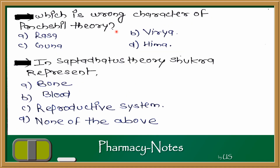Next question: which is the wrong characteristic in the Pancha-Guna theory? The Pancha-Guna theory includes Rasa, Guna, Veerya, and related properties. However, Kwath is a formulation known as decoction, and is not part of the Pancha-Guna theory. The answer is Kwath — it is not included in the Pancha-Guna theory.